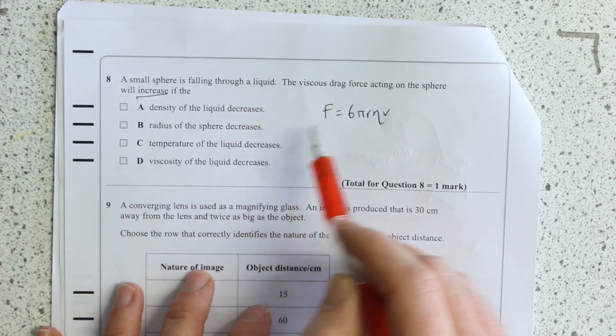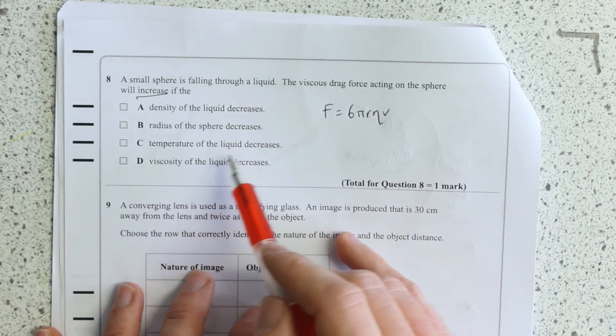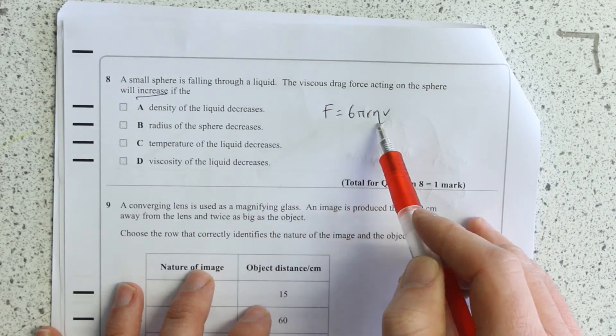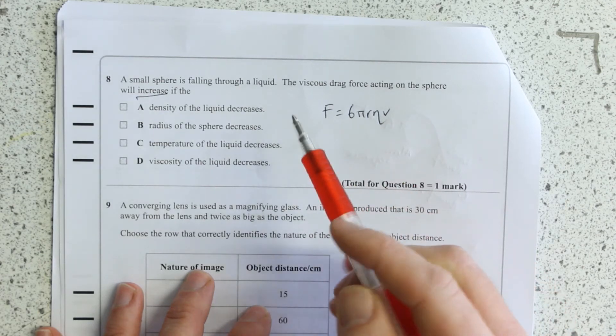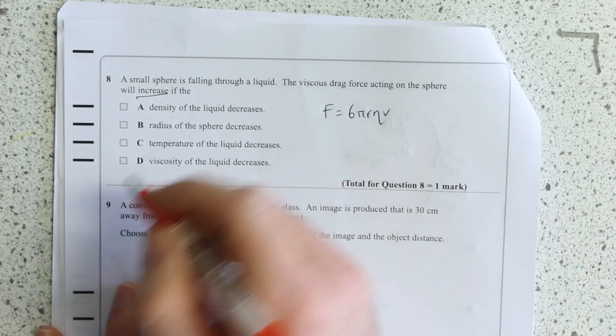The radius of the sphere decreases. No, F is clearly proportional to radius. Temperature of the liquid decreases. So colder fluids tend to be more viscous. The viscosity of the liquid decreases. No, that would decrease the force. So it's got to be C.